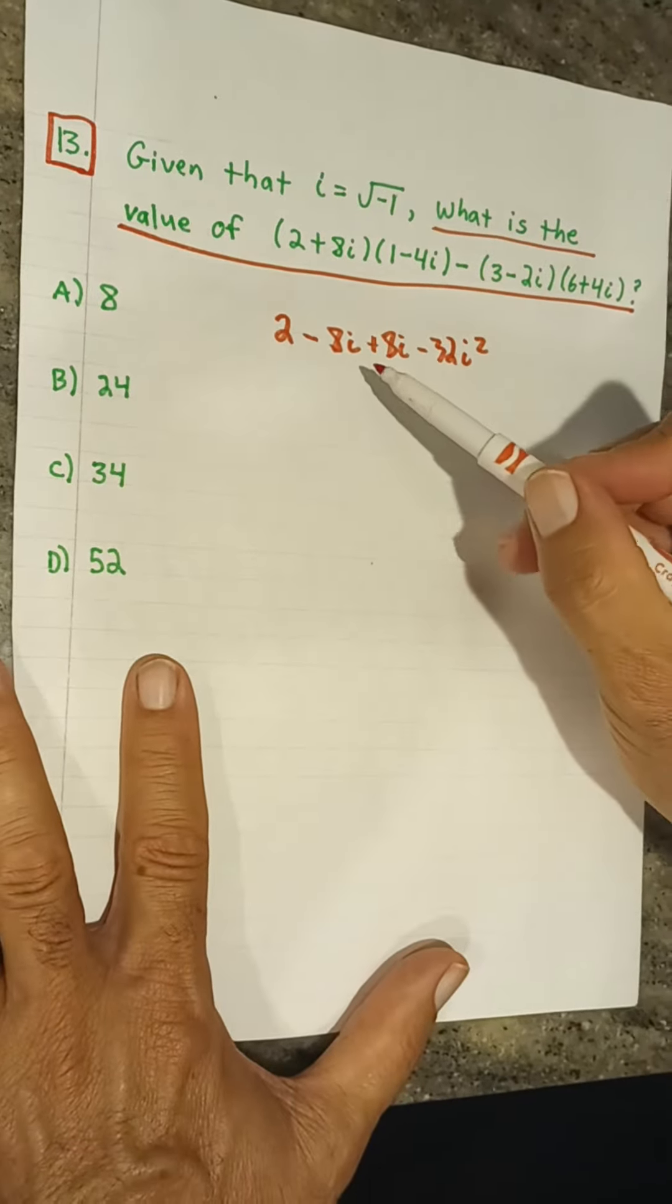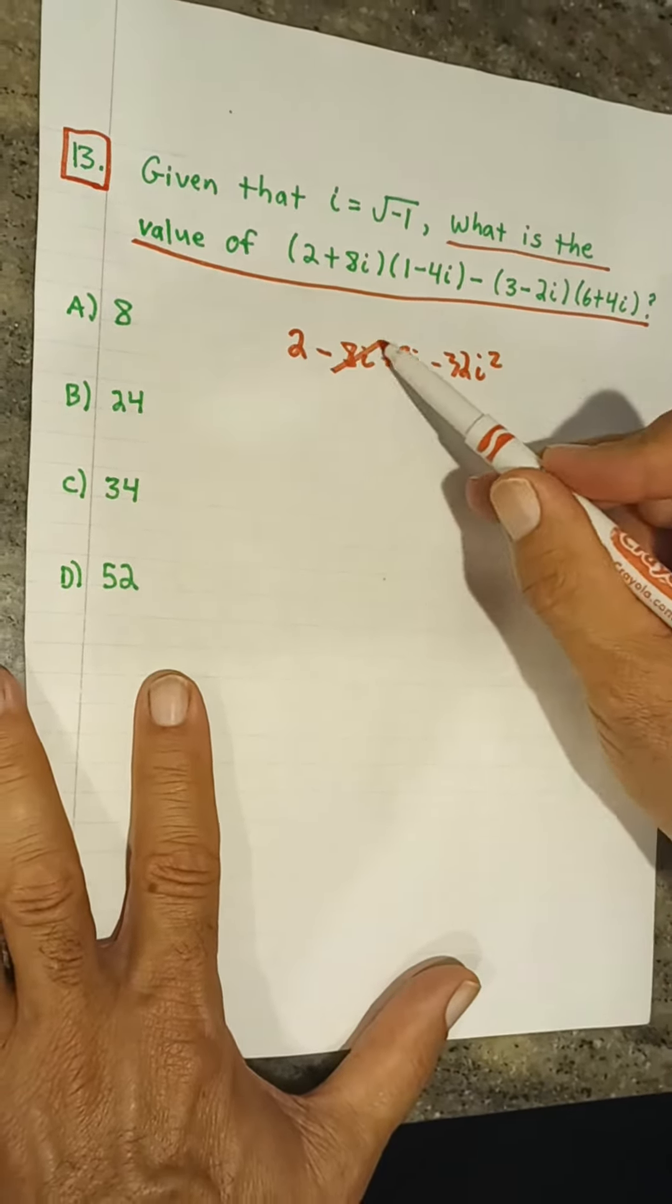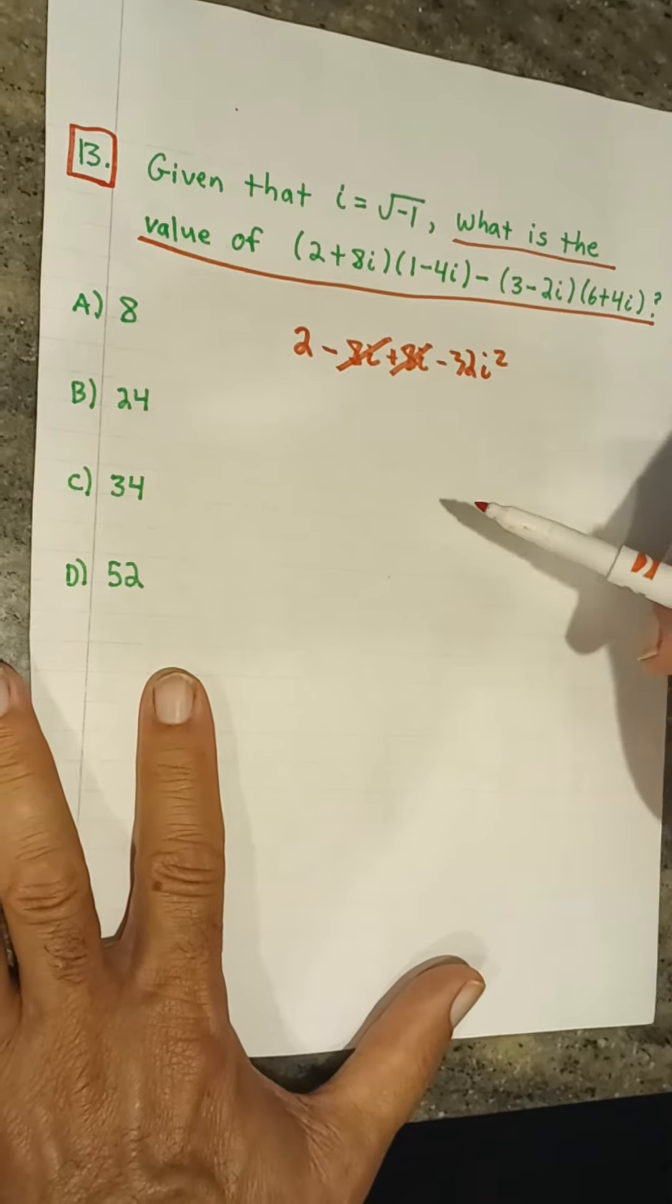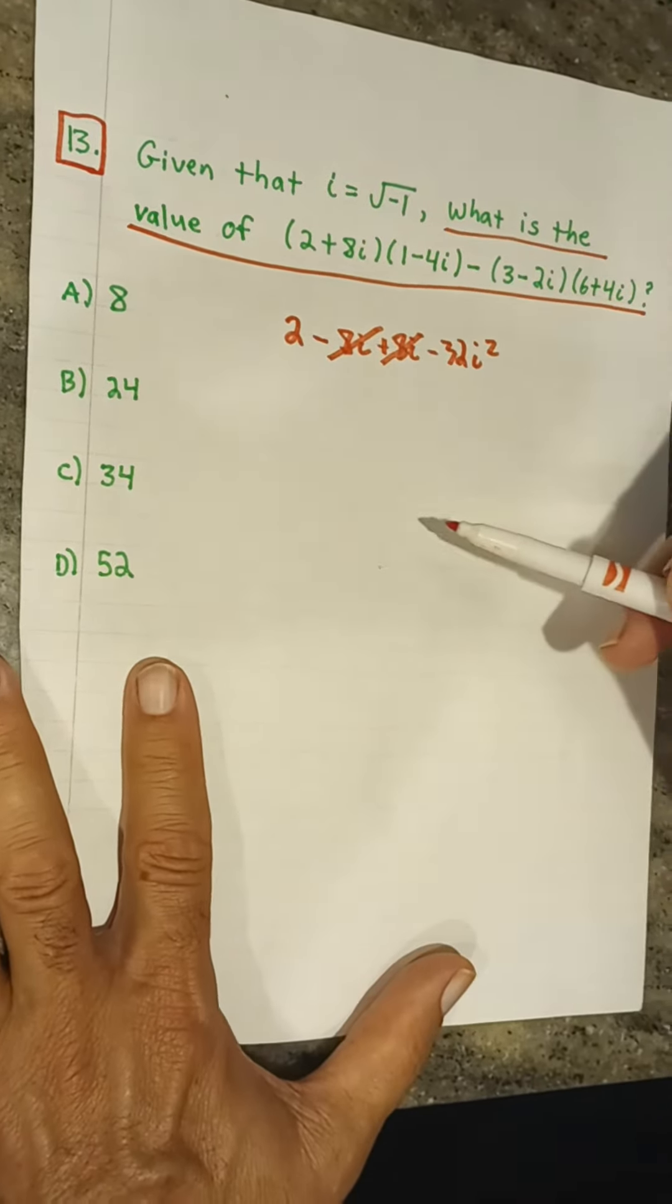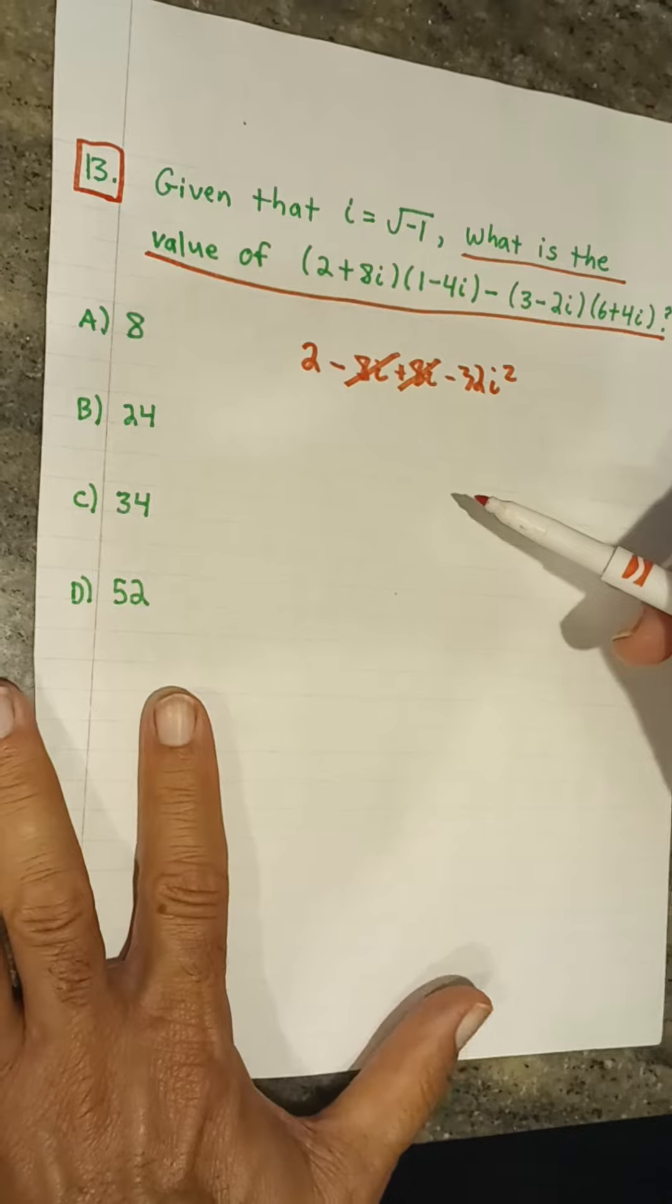Now look what happens to our outside and inside terms here. They cancel. And that's not surprising given that the answer choices don't have i's, right?